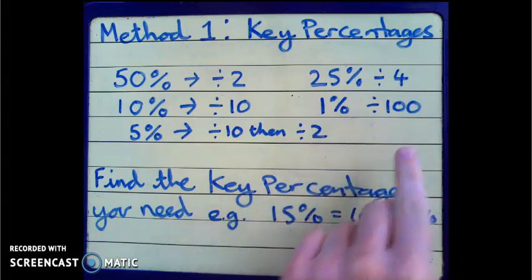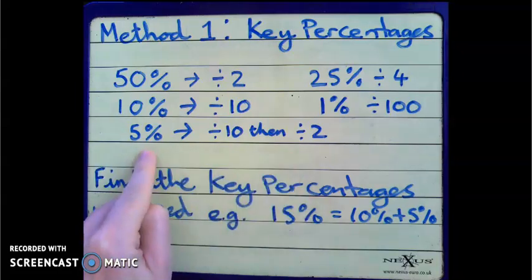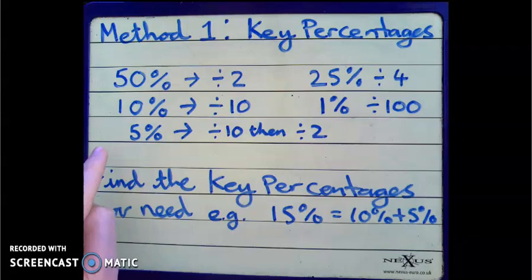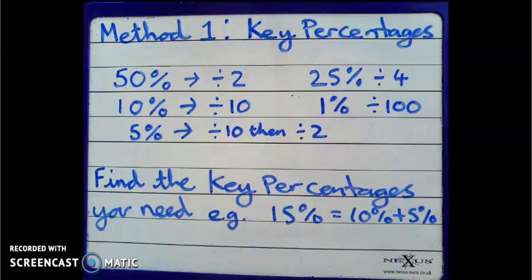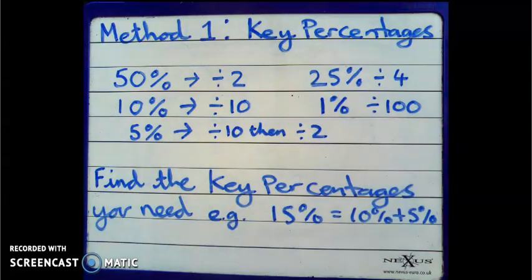We can also use those to find other percentages. For instance, if we found 10% of a number, we can then divide that answer by 2 to find 5%, because 10 is double 5, and 5 is half of 10. To find other percentages that are not part of the key percentages, all we need to do is add those key percentages together. For example, 15% is 10% plus 5%. If we find 10% of a number and find 5% of that number, add those two answers together, we will have found 15%.